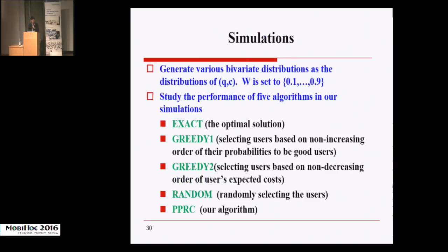Now we come to the simulations. We are not aware of any other work that has a similar problem. So we implemented three heuristics in our simulations, including Greedy 1, Greedy 2, and the Random algorithm. And also we implemented the exact algorithm, which outputs an optimal solution with exponential time. The Greedy 1 algorithm selects users based on non-increasing order of their probability to be a good user. This is a very trivial and intuitive idea. The Greedy 2 algorithm selects users based on non-decreasing order of users' expected costs.